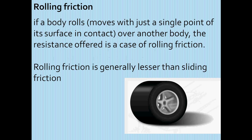Next is rolling friction. If a body rolls, moving with just a single point of its surface in contact over another body, the resistance offered is the case of rolling friction. Rolling friction is generally lesser than sliding friction, as shown in this picture.